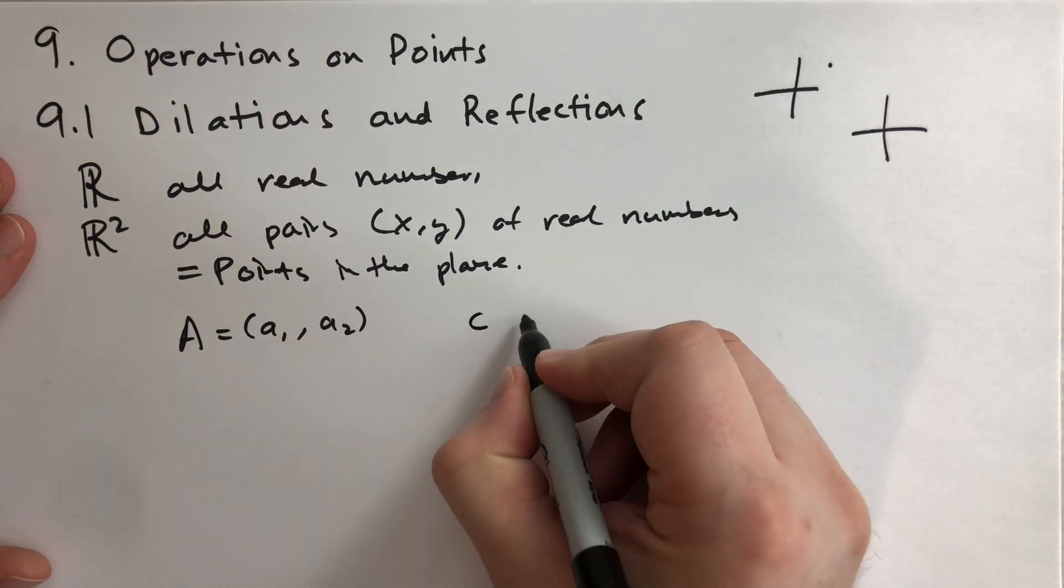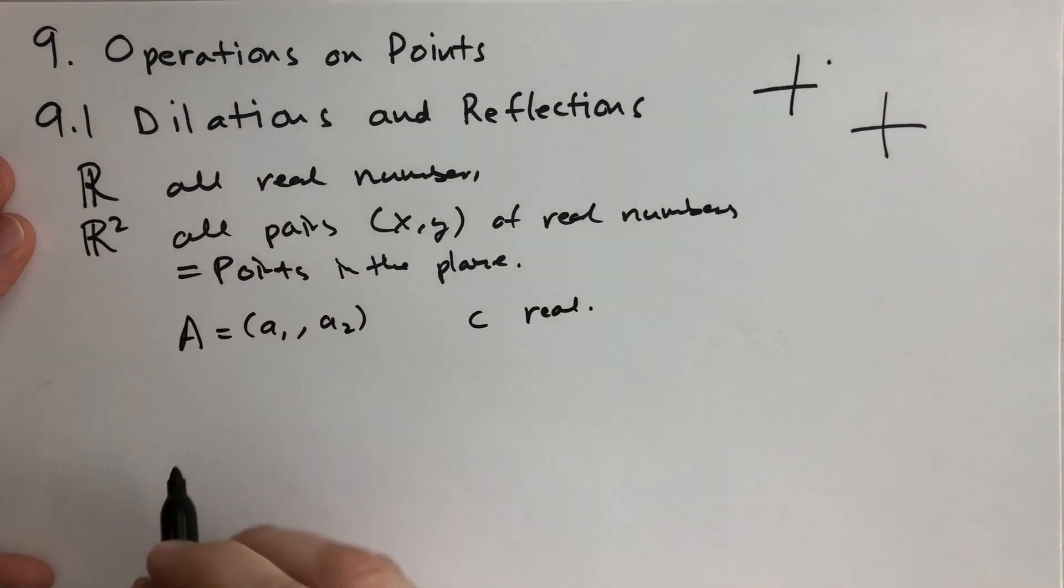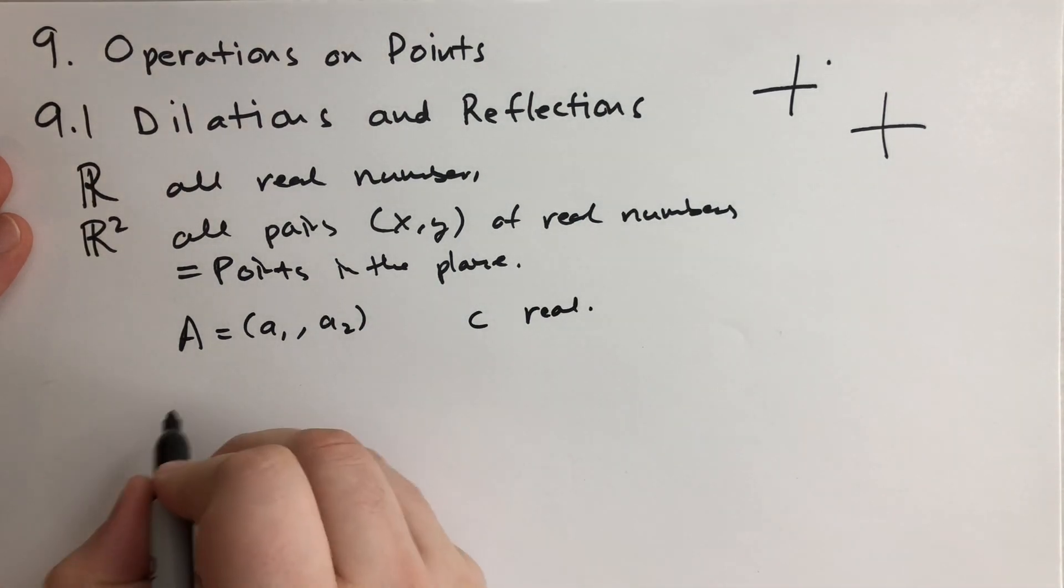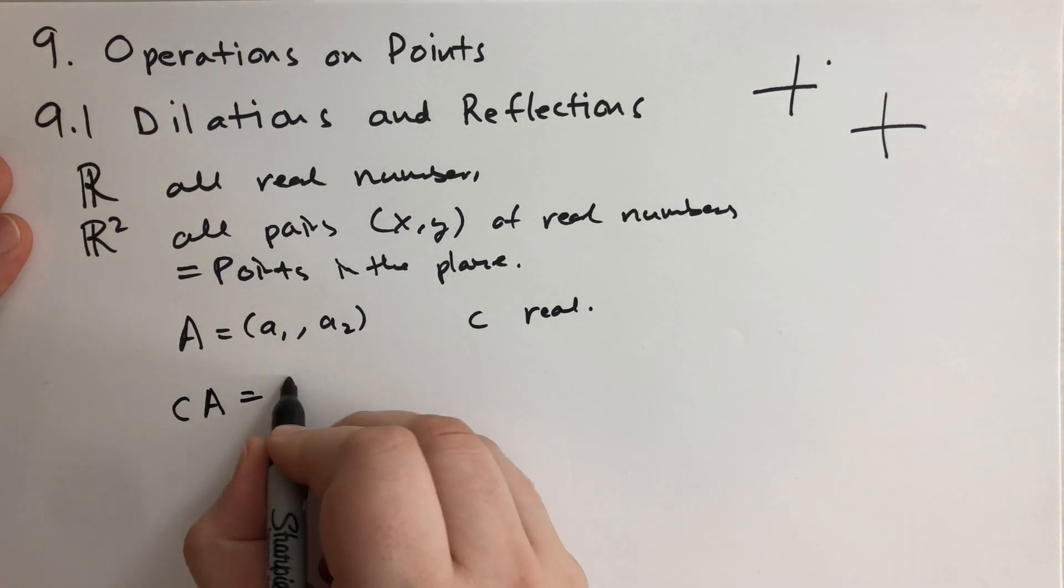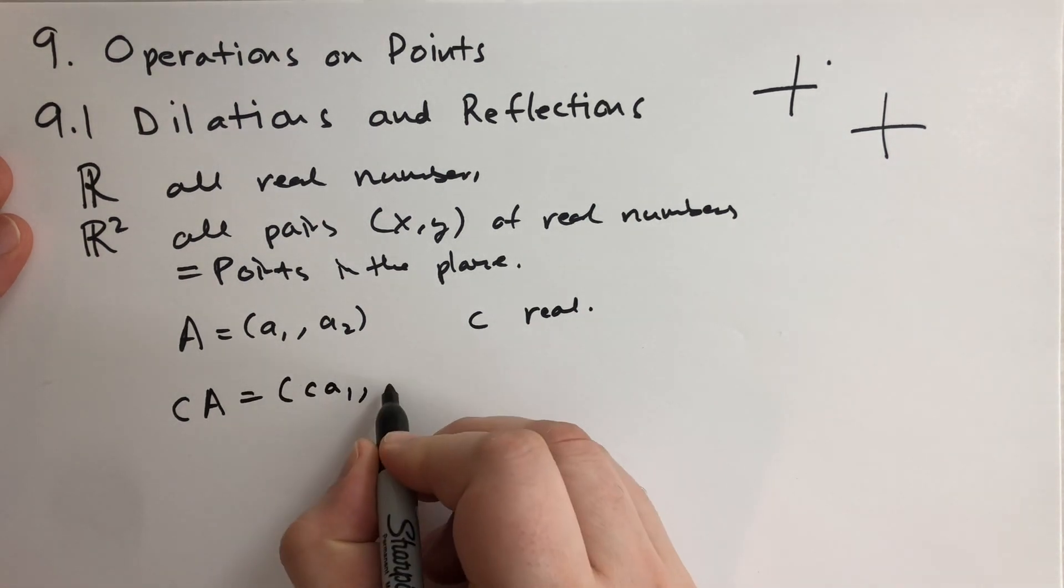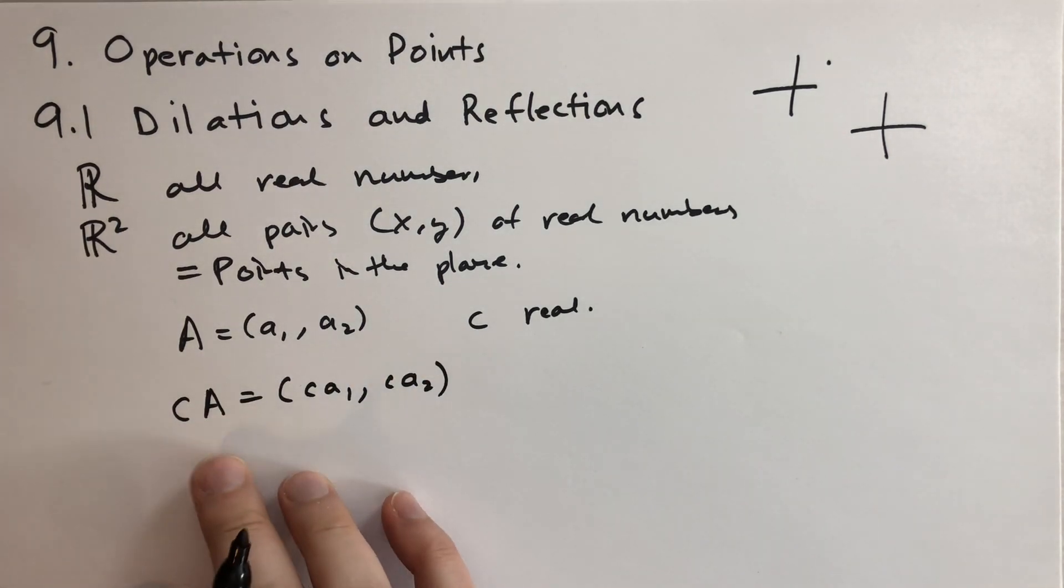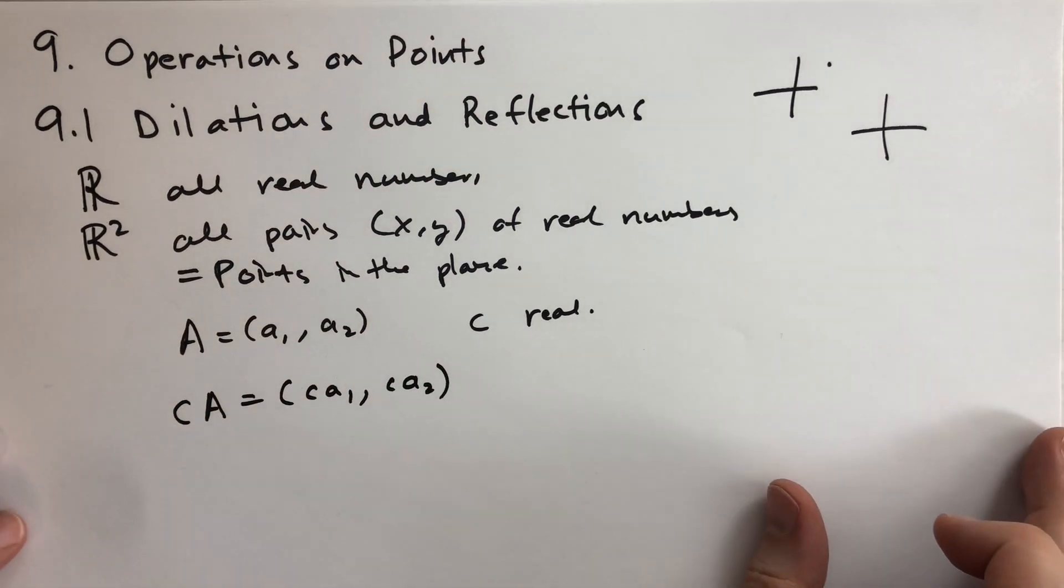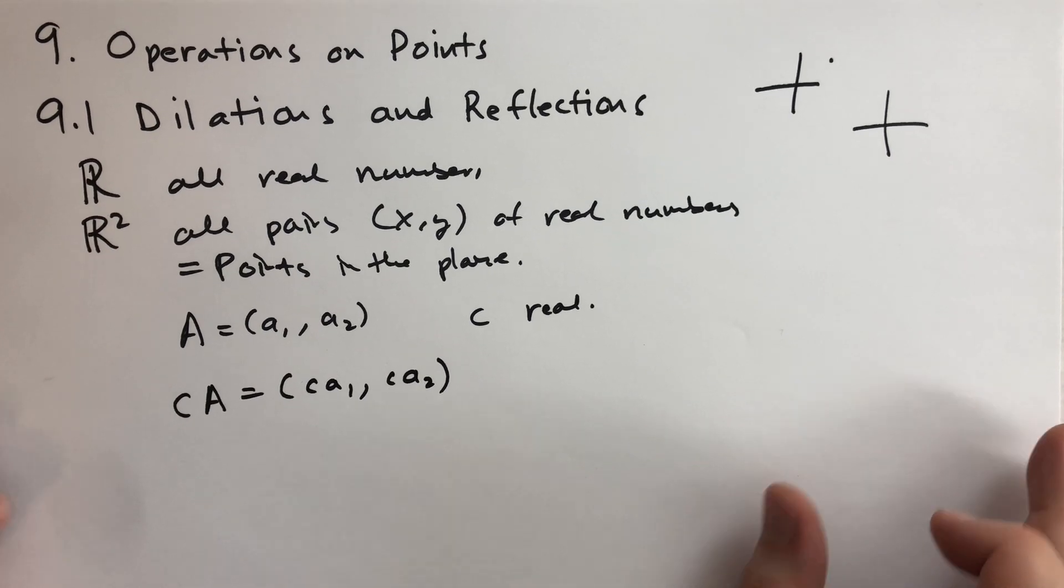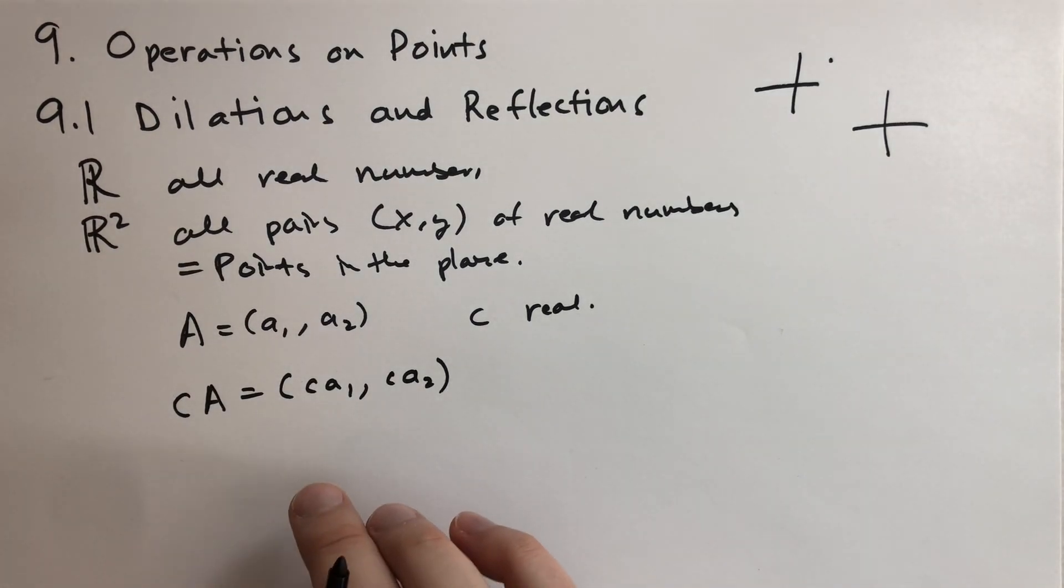Now we take C is some real number and then we define CA to be the point where we multiply each coordinate by the quantity C. So now why are we doing this? The answer is because we can and the other answer is because we want to see what happens if we do this.